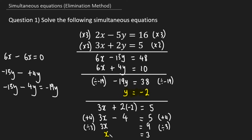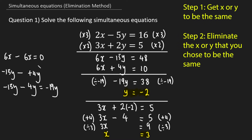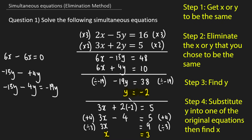We found y equals negative 2 and x equals 3. To recap: step one is to get your x's or y's to be the same — in this case we chose x. Step two is to eliminate them by subtracting the equations. Step three is to find y by rearranging. Step four is to choose one of your original equations and substitute the value found for y to find x. If you have any questions please leave them in the comments below — thank you very much for watching, take care.